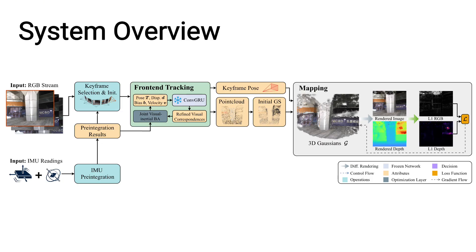The global map is then continuously refined through differentiable color and depth re-rendering losses, enabling the system to incrementally build a high-fidelity 3D Gaussian representation.